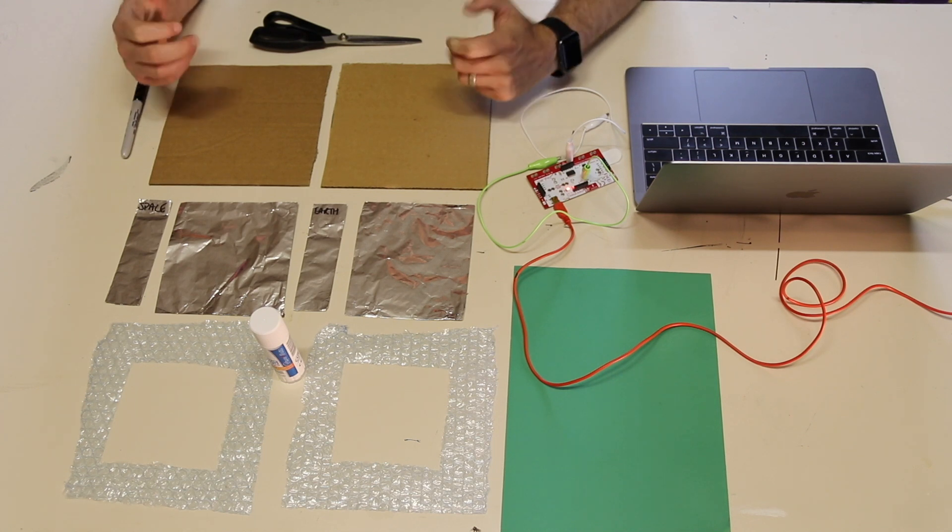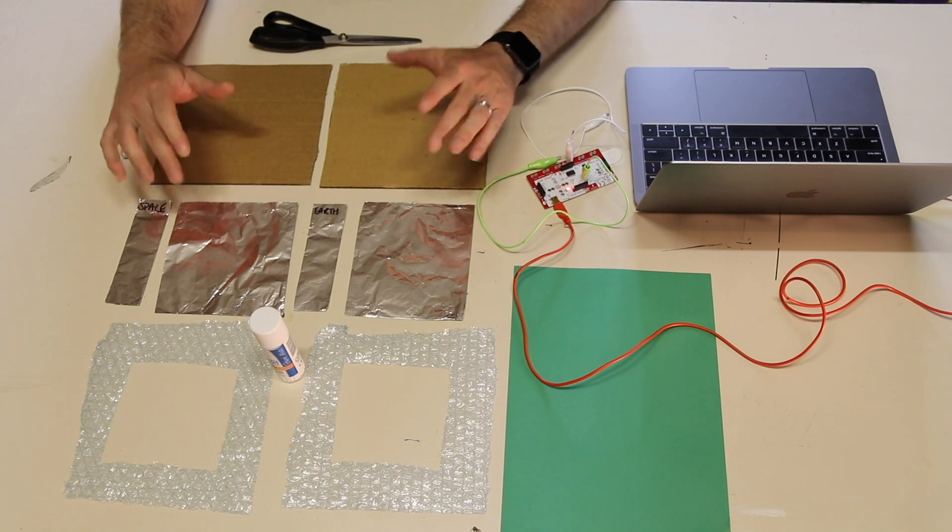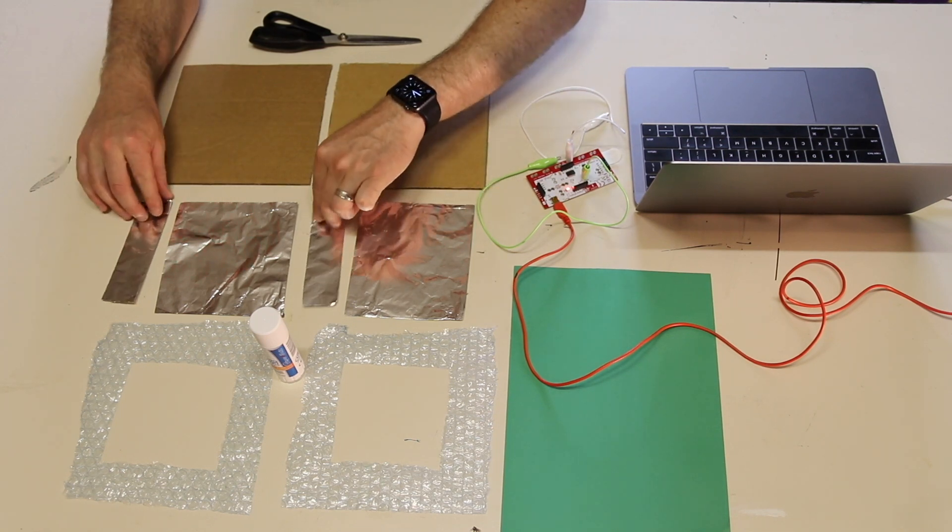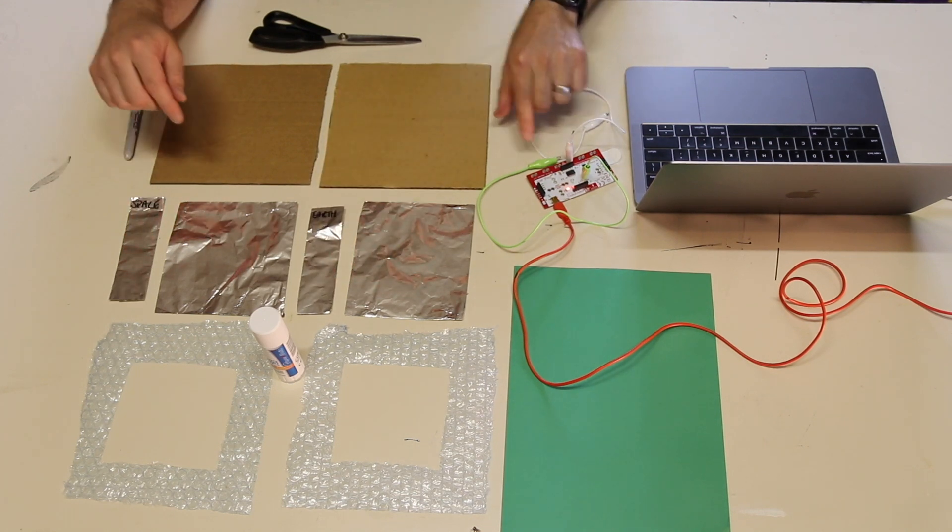So the things you're going to need are some cardboard, some aluminum foil for the circuits, I've got two tabs that you use to connect your alligator clips.